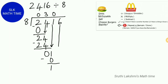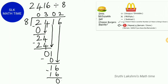Then we bring down 6. Since we still have another number, when we bring down 6 we ask: how many 8s can fit in 16? Two. So we write 2, then multiply 8 times 2, which gives us 16. We do 16 minus 16, which is 0 — that will be our remainder. And 302 is our quotient.